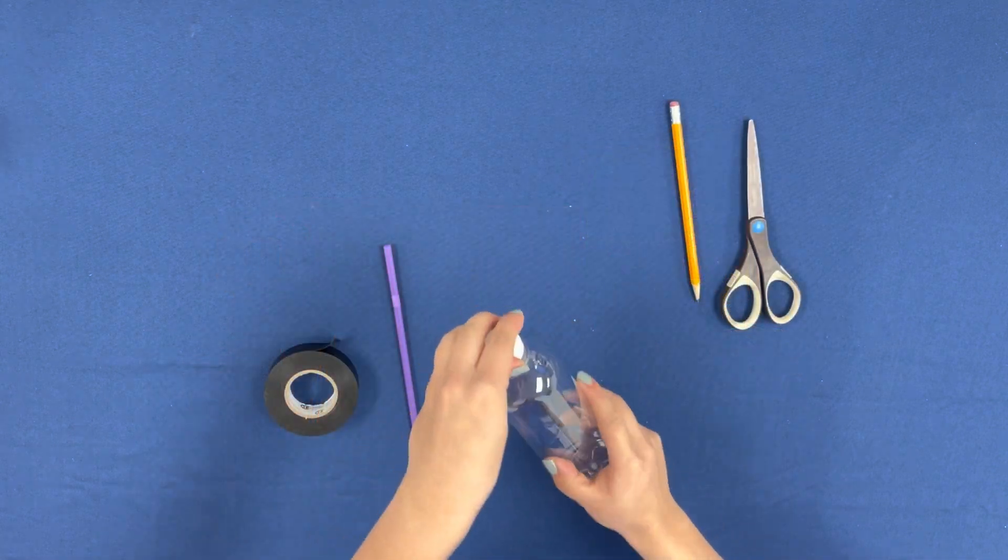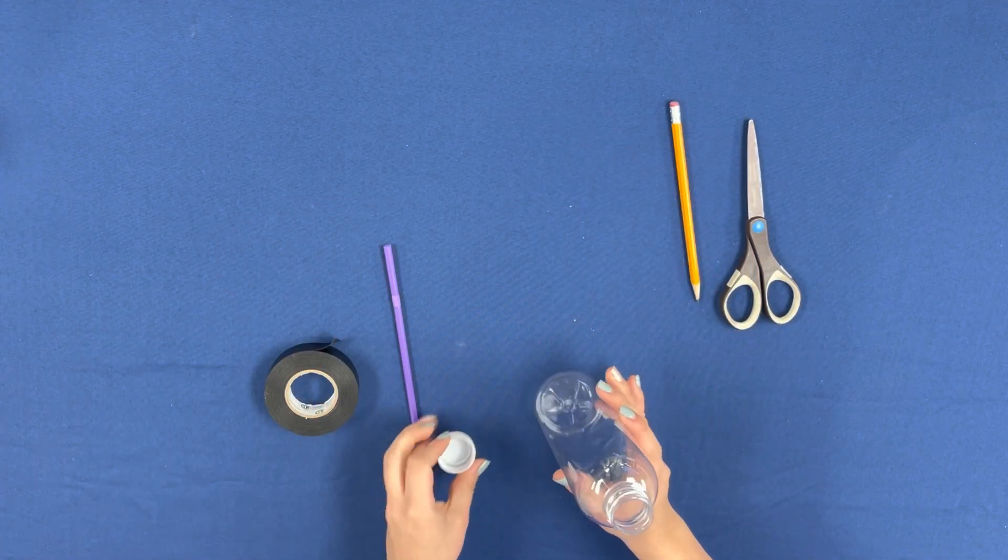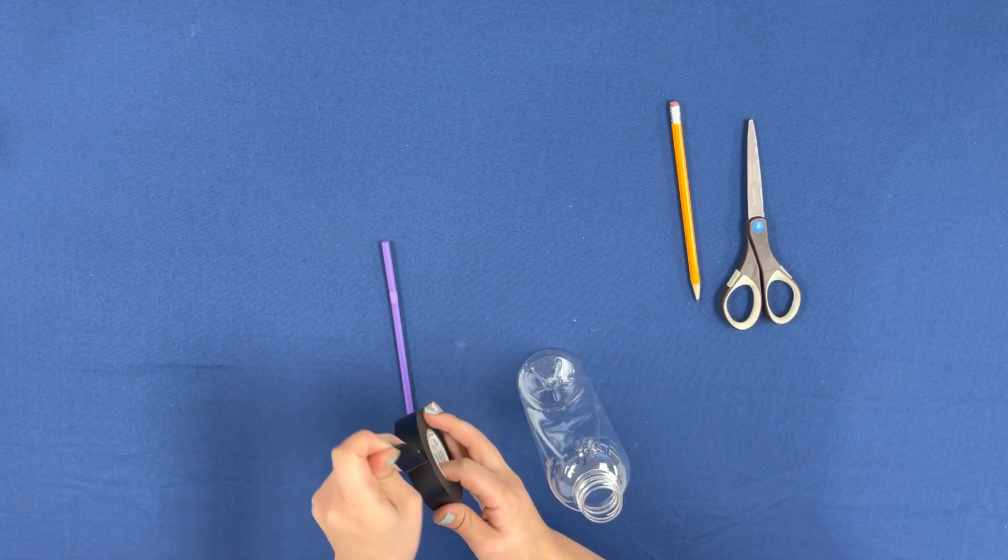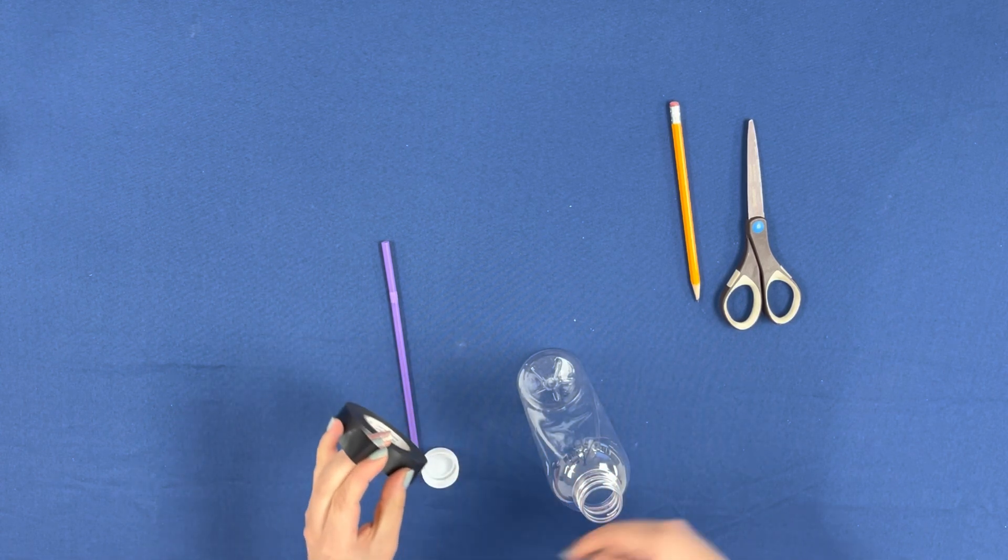We will begin by opening up our empty water bottle, then grab some electrical tape and cover the top of the bottle completely.